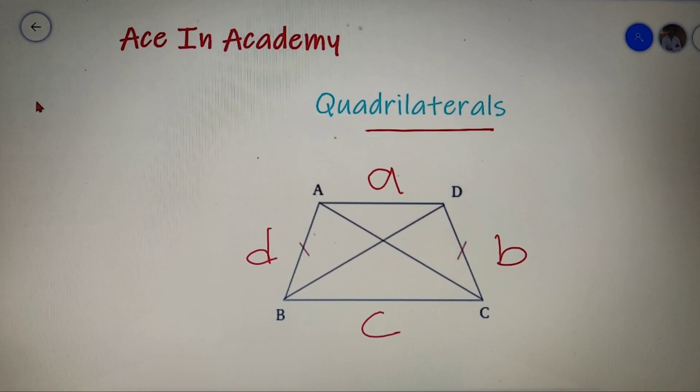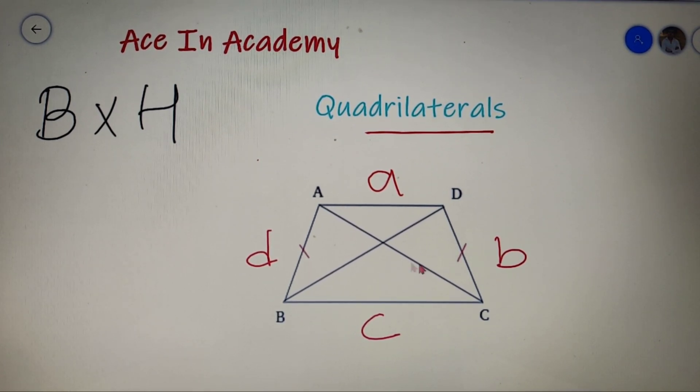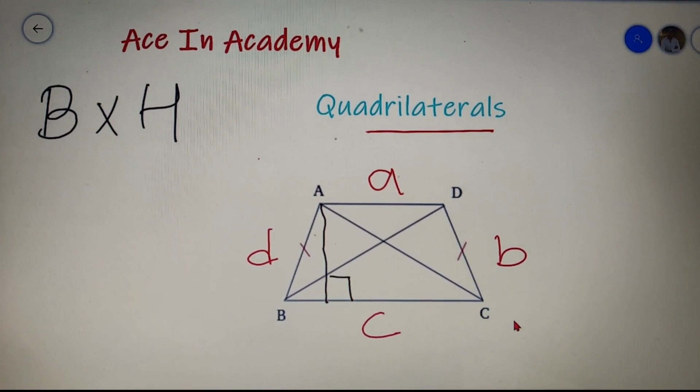The area of a quadrilateral is equal to base into height of the quadrilateral. For this quadrilateral, we have BC as the base of the quadrilateral and the height of the quadrilateral will be the length of the perpendicular drawn from the top vertex to the base of the quadrilateral.